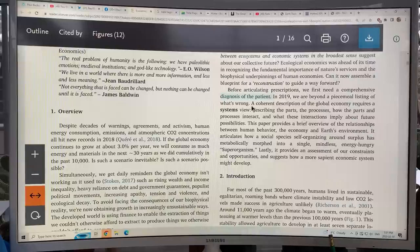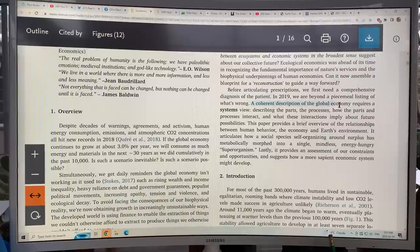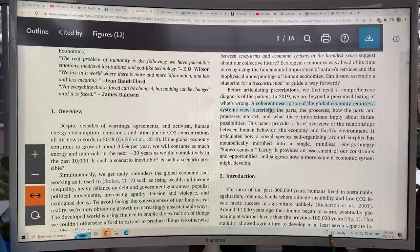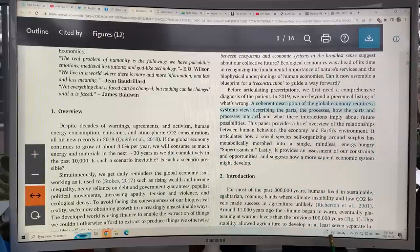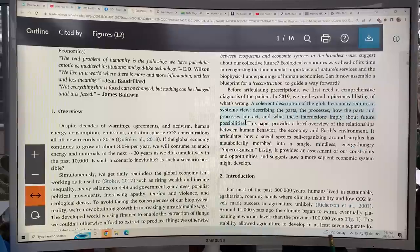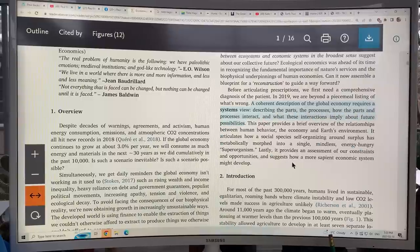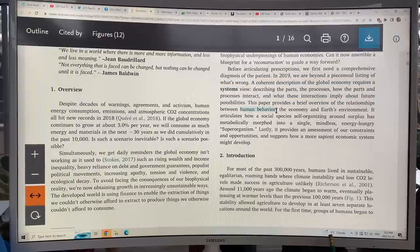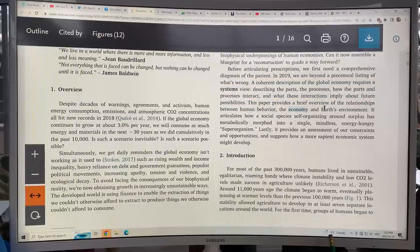We need a systems view. A coherent description of the global economy needs a systems view describing the parts, the processes and how the parts and processes interact with each other, what these interactions imply about future possibilities and how these interactions change. And the important things are human behavior, the economy and Earth's environment.